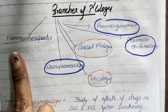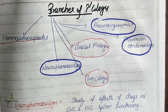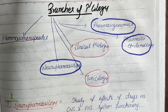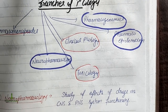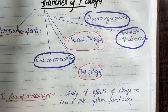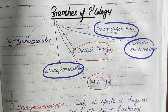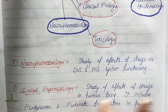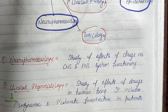The branches of Pharmacology include Pharmacokinetics, Neuropharmacology, Clinical Pharmacology, Pharmacogenomics, Toxicology, and Pharmacoepidemiology. These branches are given in different books. The first branch is Neuropharmacology.